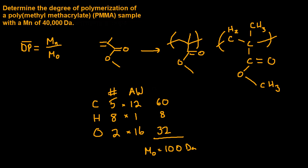So, using the equation we defined earlier, we can determine that the degree of polymerization is equal to 40,000 Daltons over 100 Daltons, which works out to be 400.